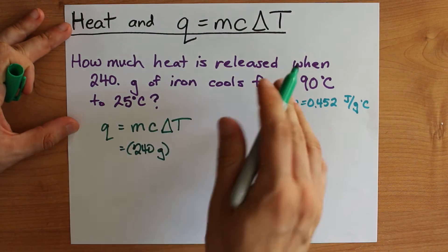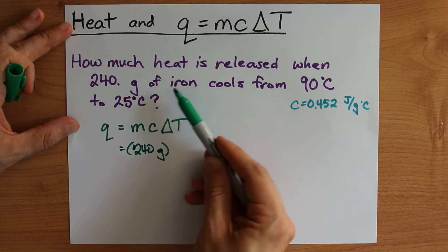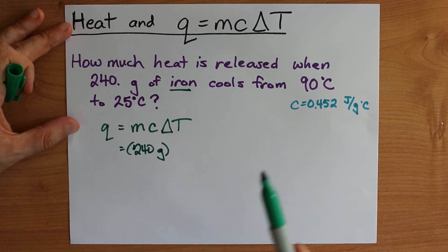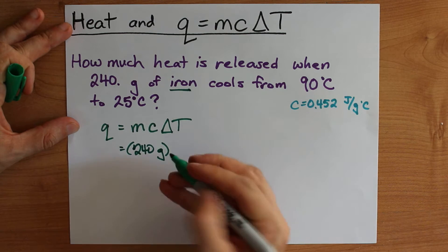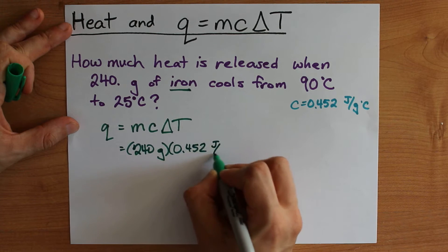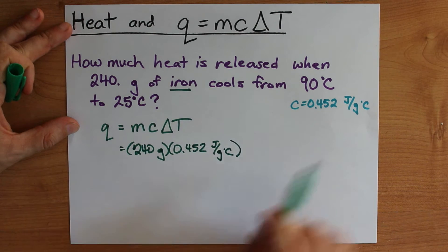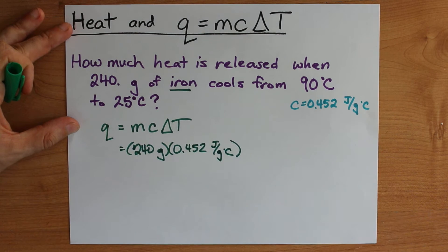C stands for specific heat capacity. It's usually going to be given to you if they tell you what the substance is. Iron has a specific heat capacity of 0.452 joules for every gram heated up by 1 degree Celsius. That's joules per gram degree Celsius.